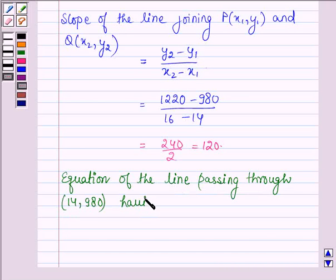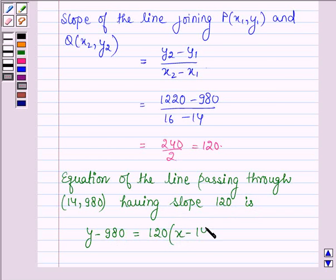having slope 120 is given by Y minus 980 is equal to 120 into X minus 14